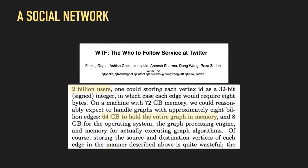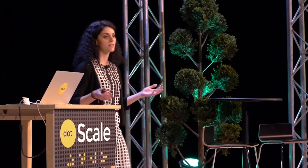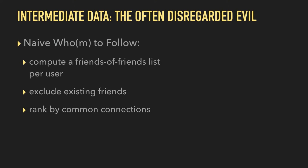Take, for example, Twitter. Twitter runs its who-to-follow service on a single machine, and they actually need just 64 gigabytes of memory to represent a graph of two billion users. I'm quite sure you don't have two billion users. However, if you've used graph analysis, you know that the size of the input data set is usually not the most important thing. It's not what defines whether you need distributed graph processing or not. What really matters is intermediate data, because in graph applications, state can explode really fast.